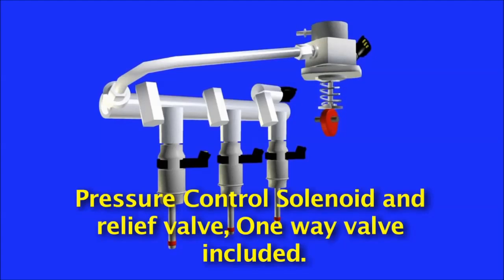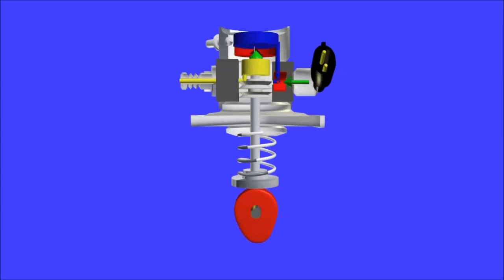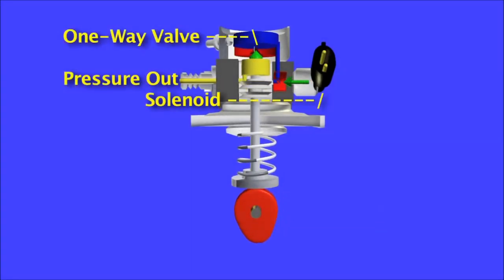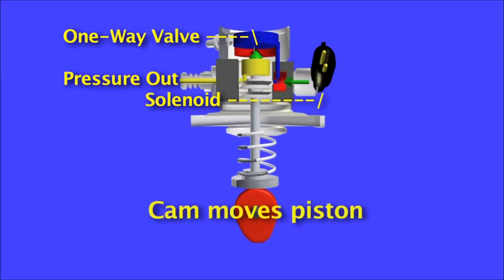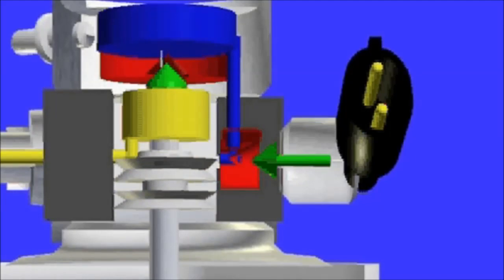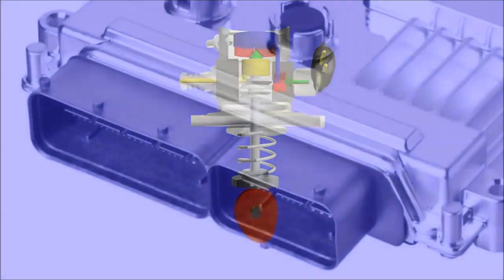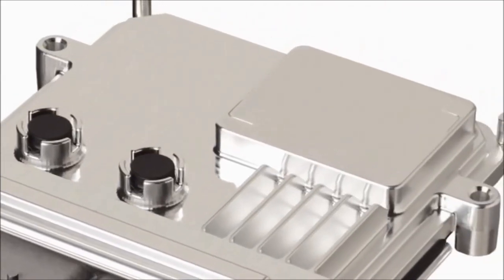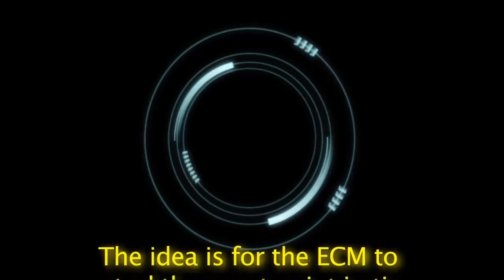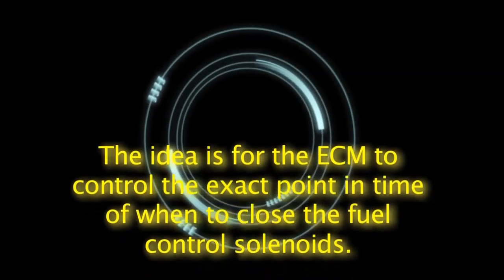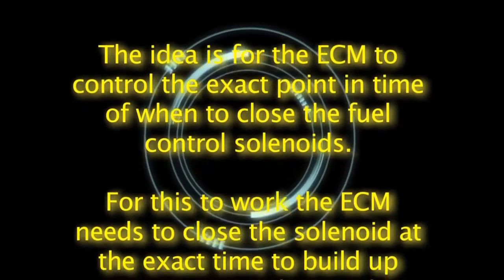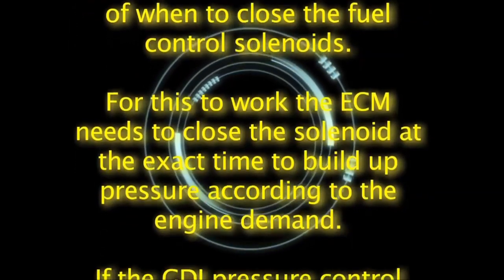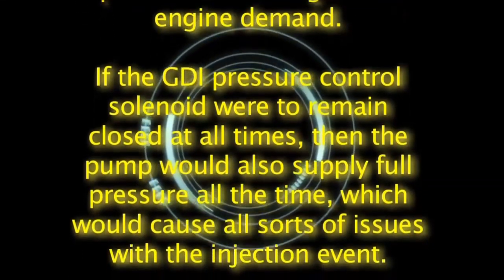Seen here, the cam lobe actuates on the GDI high pressure pump plunger and piston. Upon simple observation it is a normal piston pump, with nothing extraordinary about it. However, the key component is the fuel pressure control solenoid to the right of the pump side. The ingenious ingredient is the high processing power of the ECM used to control the pump solenoid. The idea is for the ECM to control the exact point in time of when to close the fuel control solenoid. If the GDI pressure control solenoid were to remain closed at all times, the pump would supply full pressure all the time, which would cause all sorts of issues with the injection event.